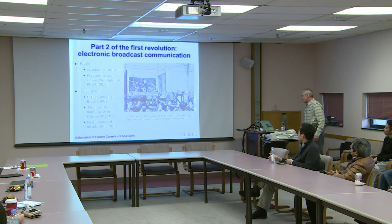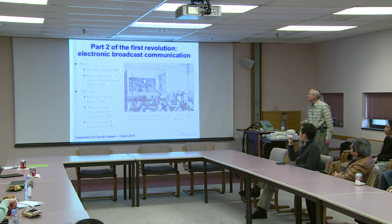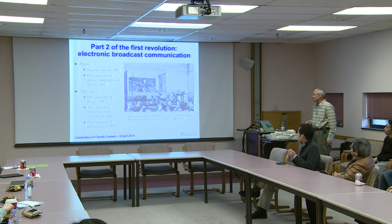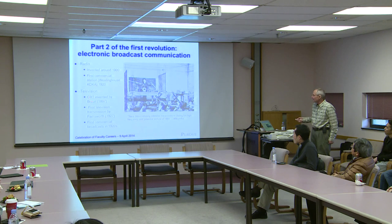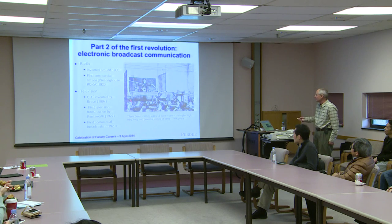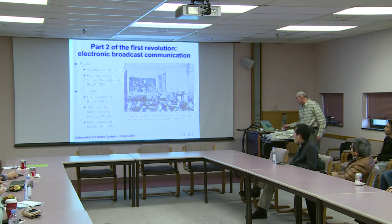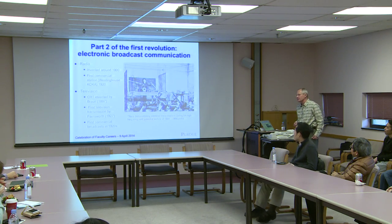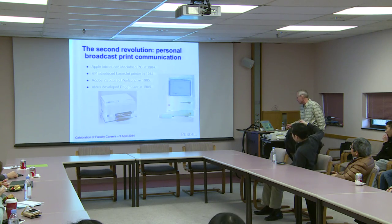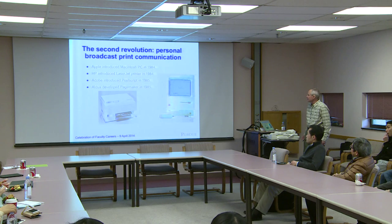Part two of this revolution in communication was the development of electronic broadcast communication. We had radio, which was invented around 1900, and then television, with commercial broadcasts in the 1920s. Here's a picture of Tesla demonstrating wireless transmission. That's a broadcast medium where a few people could broadcast to a very large audience, but the average person certainly couldn't access this type of capability.